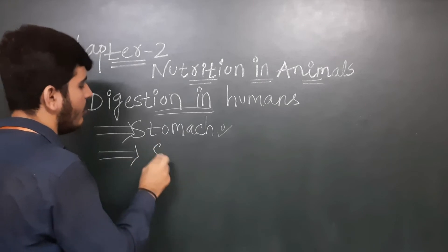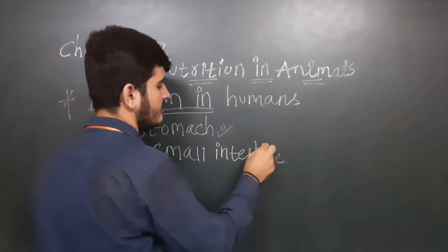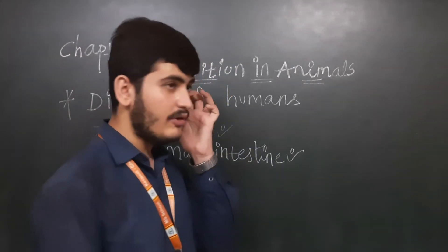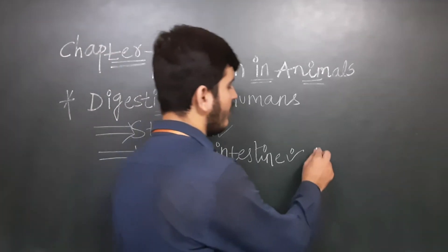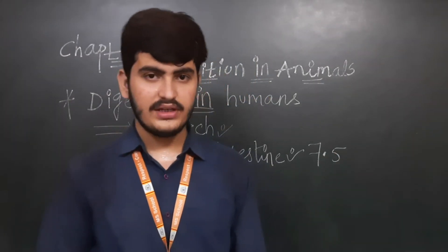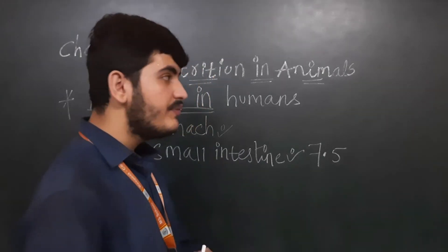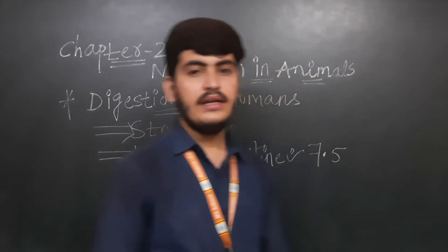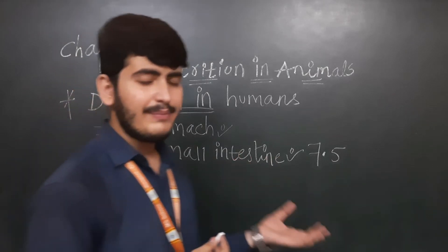Now moving forward to the small intestine. The small intestine is highly coiled — as I have shown you in the live session, it is totally rounded in shape. The size of the small intestine is 7.5 meters long. It receives juices from the liver and pancreas, and juices are also secreted in the walls of the small intestine itself.